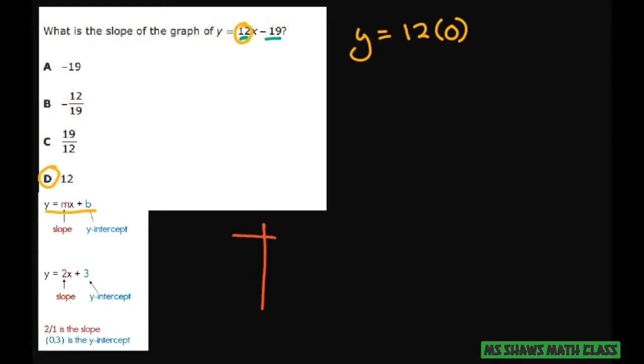x, y, and you plugged in 0, you would get y equals negative 19. So if they ask for the y-intercept, that would give you answer A.